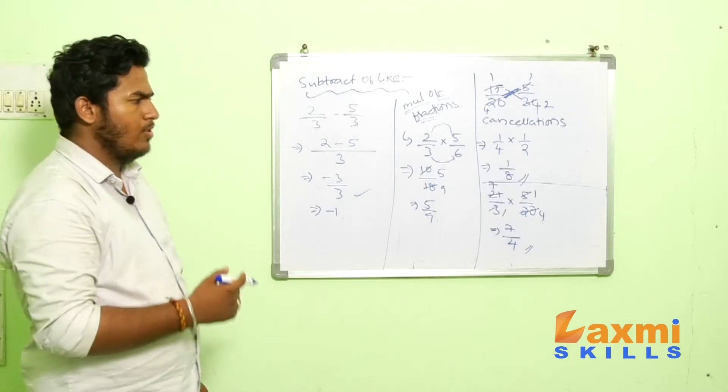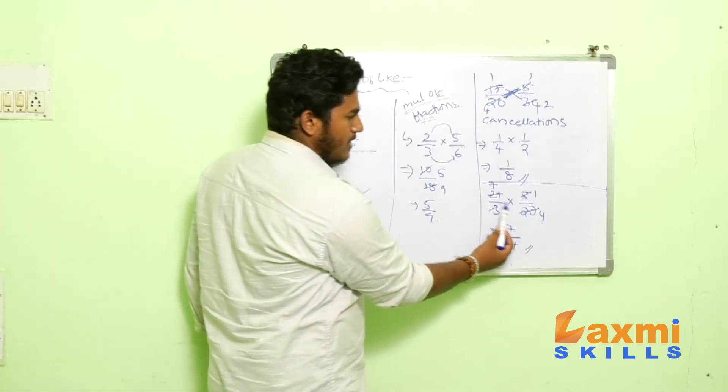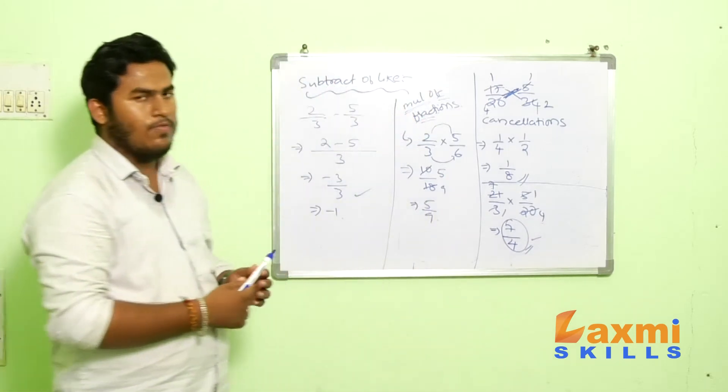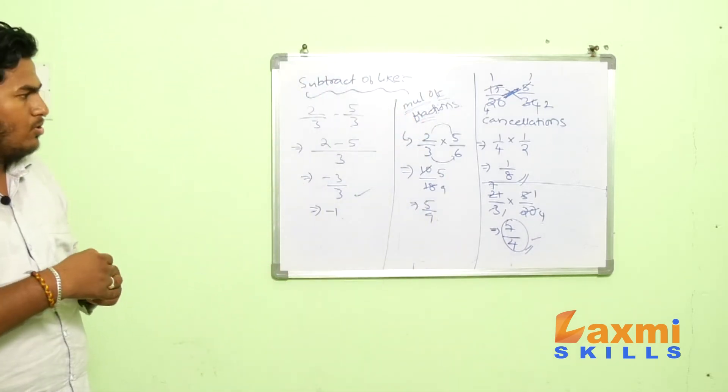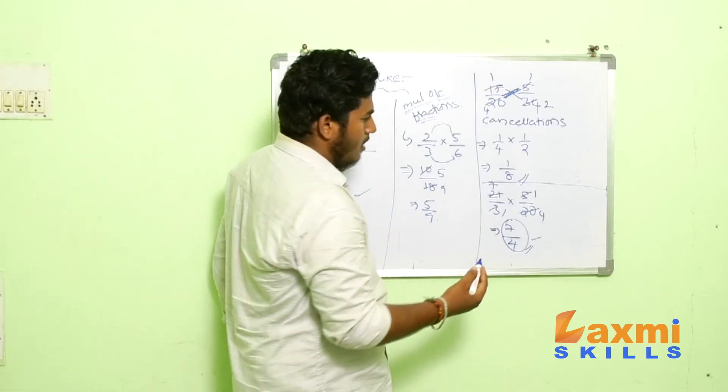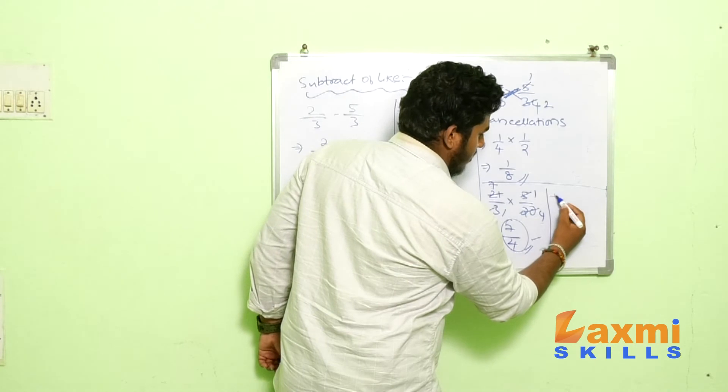So, in multiplication, every time you don't go for solving. You just check for the cancellations and make it into the simplest form. So, it is the way you need to solve the multiplication of unlike fractions or some fractions. So, it would be very easy. So, next, you need to try this. Try this.